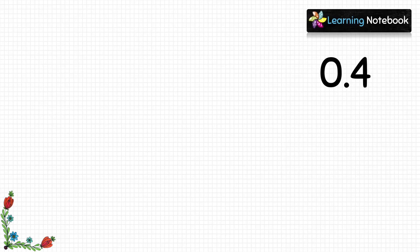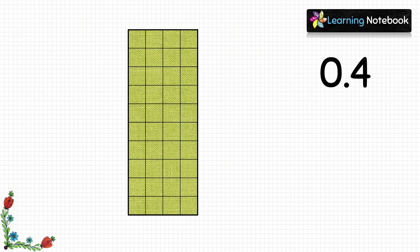Now let's see how to represent the decimal number 0.4 using this grid. To represent 0.4 we need 4 columns of this grid. Each column represents 0.1, so 4 columns represent 0.4.